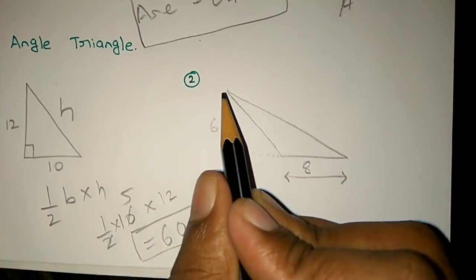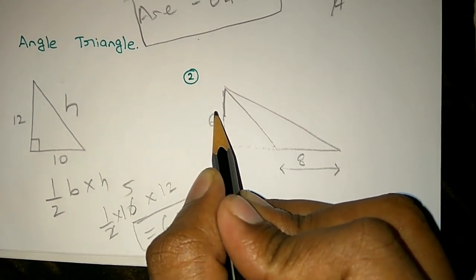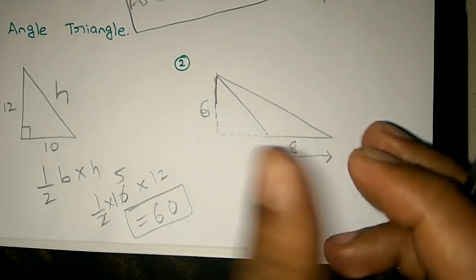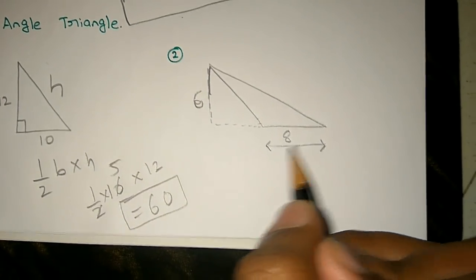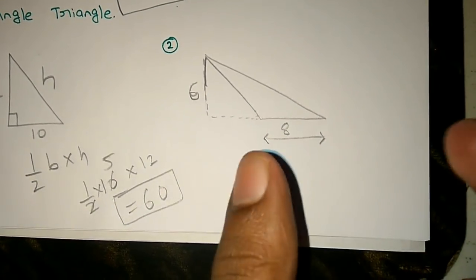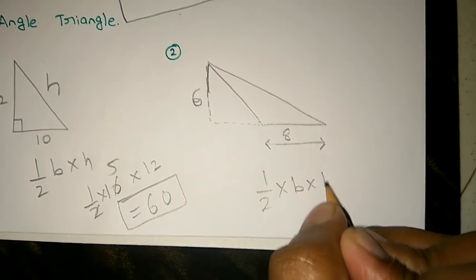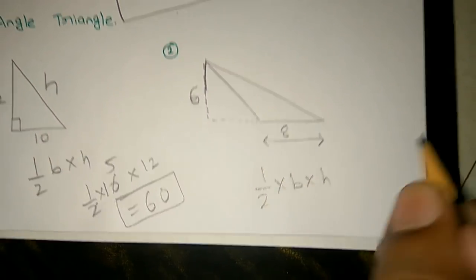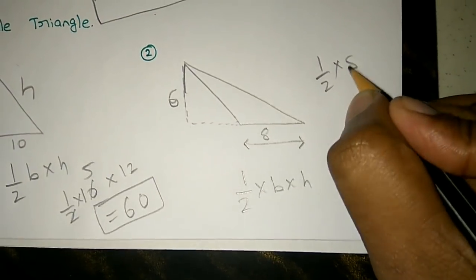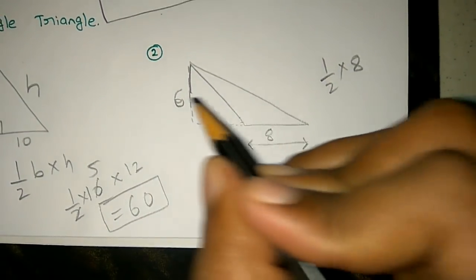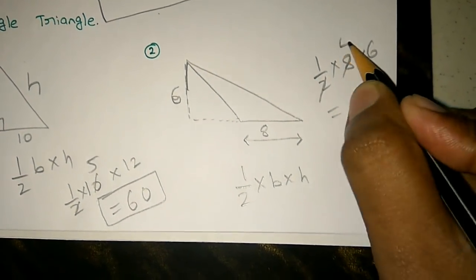Let's take an example. If we take the height as 6 and the base as 8, the area is half times breadth times height: ½ × 8 × 6 = 24 square meters.